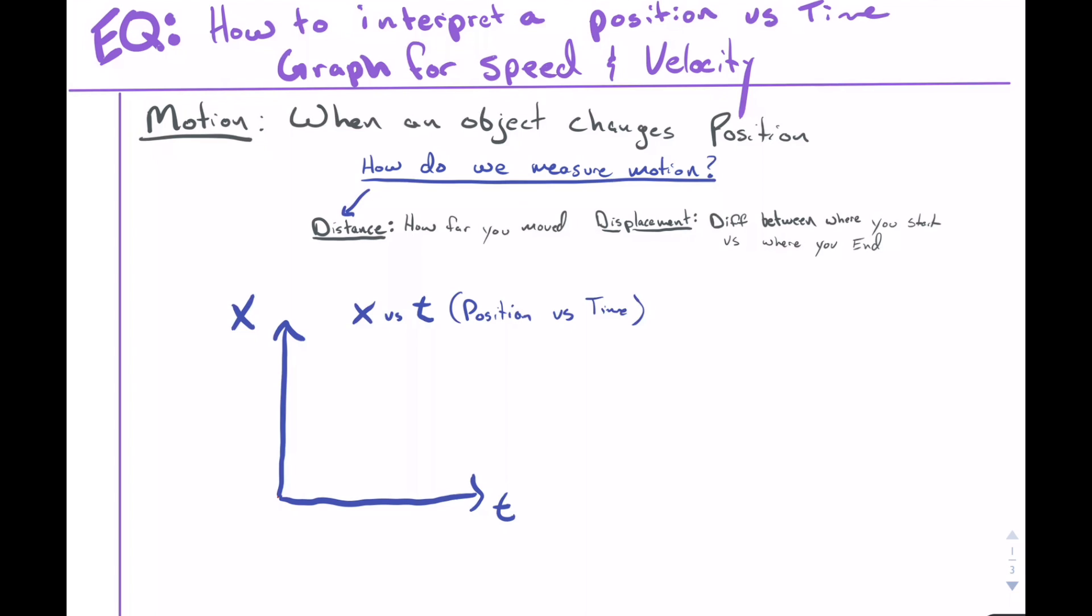Let's review what we know so far. Motion is when an object changes its position. How do we measure an object's motion? The two ways we talked about so far were distance, which is the actual path the object takes, and displacement, which is the straight line distance between the two.